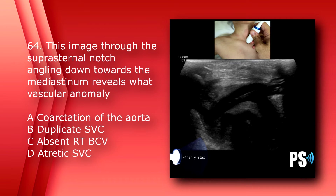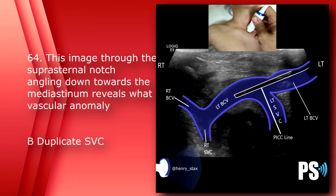Number 64: This image through the suprasternal notch angling down towards the mediastinum reveals what vascular anomaly? A) coarctation of the aorta, B) duplicate superior vena cava, C) absent right brachiocephalic vein, or D) atretic superior vena cava. The answer is B, duplicate SVC. This anomaly is present in about 0.3% of the population.